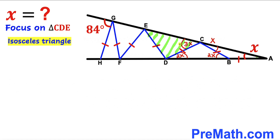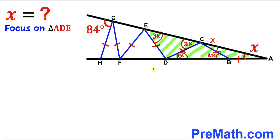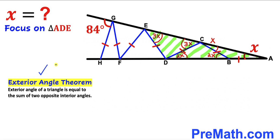Now let's focus on triangle CDE. We can see this is an isosceles triangle since this side length equals this side length, so therefore this angle has got to be congruent to this angle. If this angle is 3X, then this angle has got to be 3X as well. Focusing on the shaded triangle ADE and recalling the exterior angle theorem, this exterior angle equals the sum of the two opposite interior angles: 3X plus X makes 4X, so this angle turns out to be 4X.